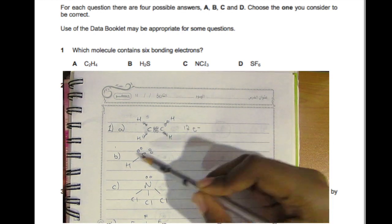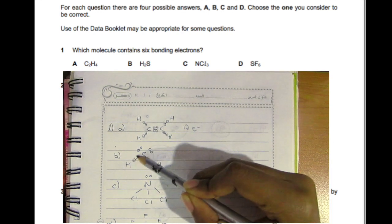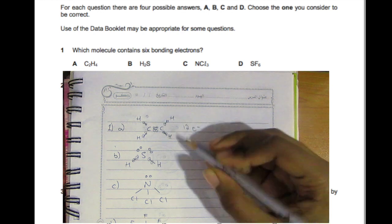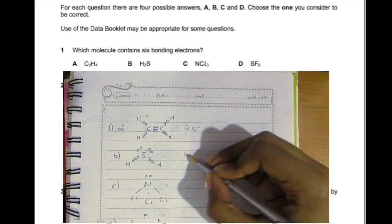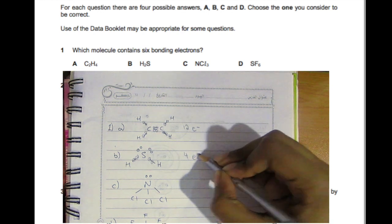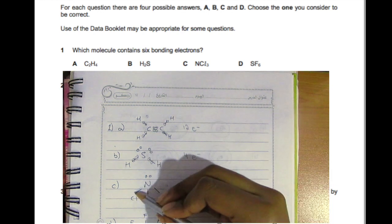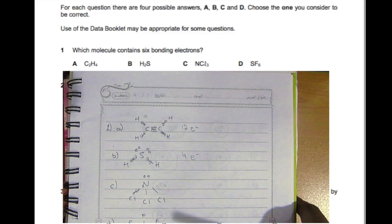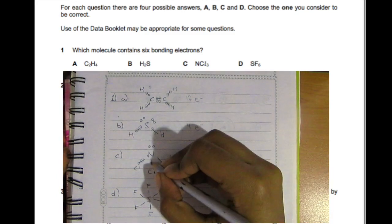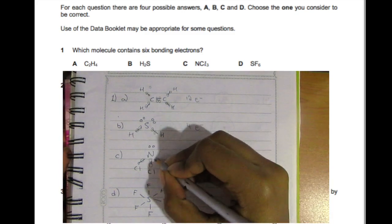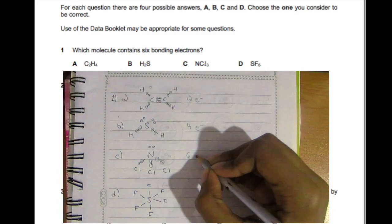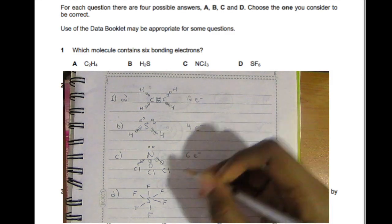For the next molecule, counting gives a total of four electrons. For the one after that, counting one, two, three, four, five, six — a total of six electrons.